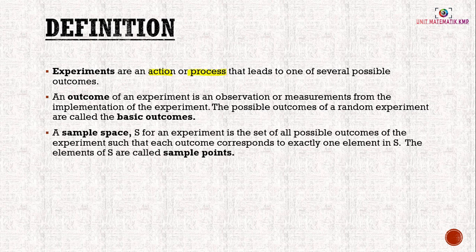A sample space, denoted as S, for an experiment is the set of all possible outcomes of the experiment, such that each outcome corresponds to exactly one element in S. The elements of S are called sample points.